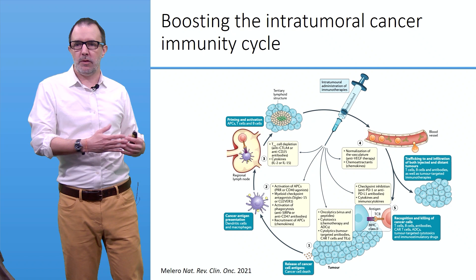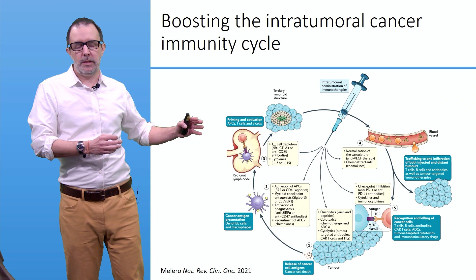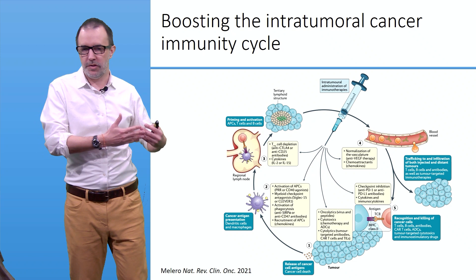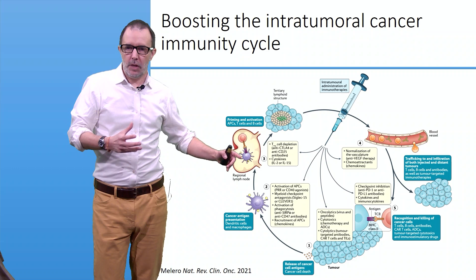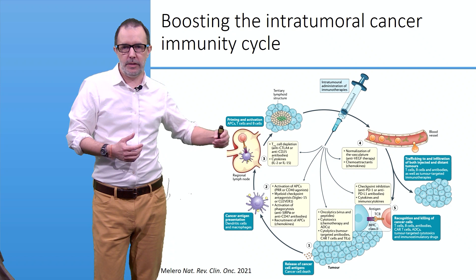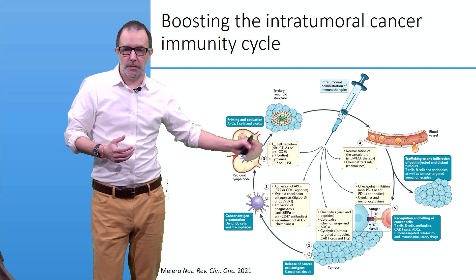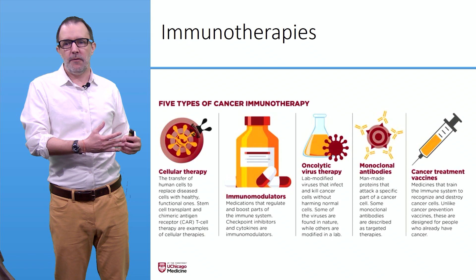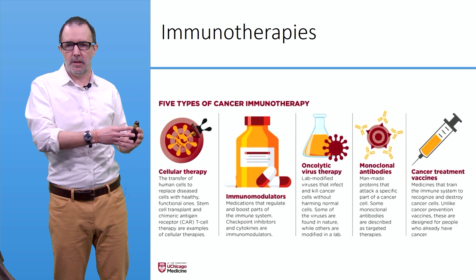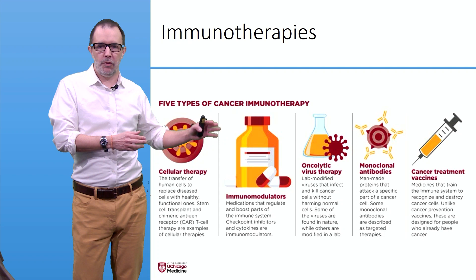So what can we do? We can try to boost the intratumoral immunity cycle. More generally, we can try to boost, modify, or stimulate this immunity cycle at every stage. There are five classes of cancer immunotherapies: cellular immunotherapy, immunomodulators, oncolytic virus therapy, monoclonal antibodies, and cancer treatment vaccines.